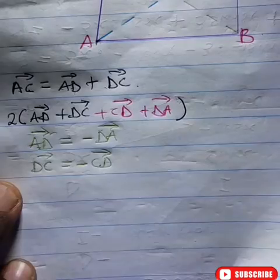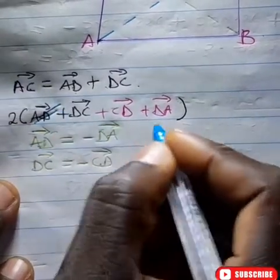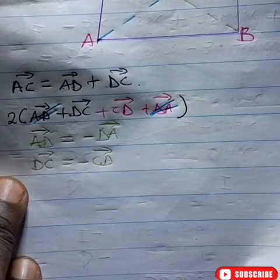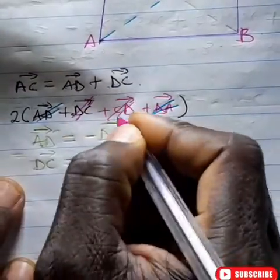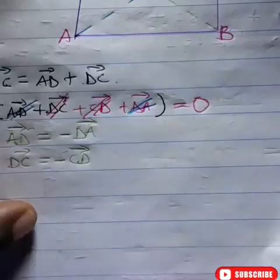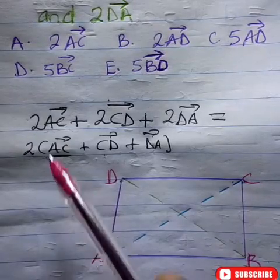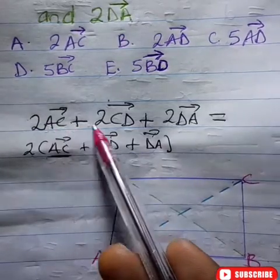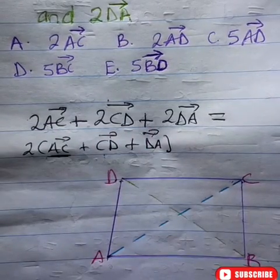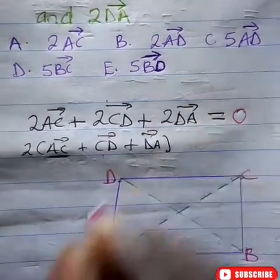So from here, you can see that this will cancel this because they are same in magnitude but opposite in direction. And this will cancel this. So this is equal to zero. Hence, 2 into AC plus CD plus DA, or 2AC plus 2CD plus 2DA, is equal to zero.